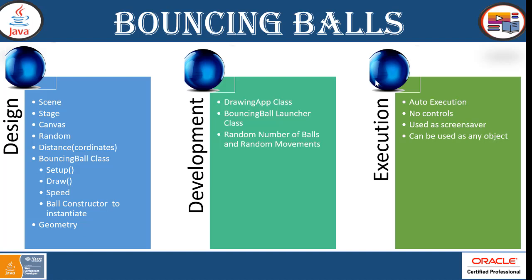Random helps you to make a number of objects which are moving in any direction. That is the Random class, which is included in the java.util package. All you need to do is include that package and use the Random class object, and that object will help you to create a random number of balls which move randomly.